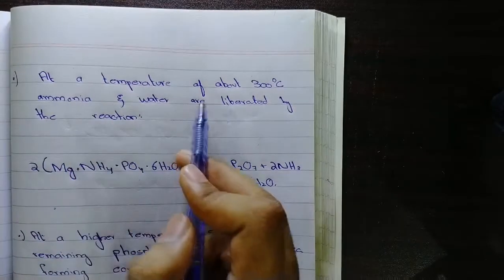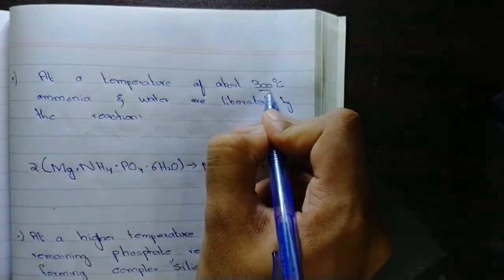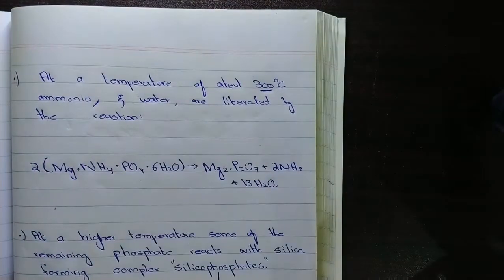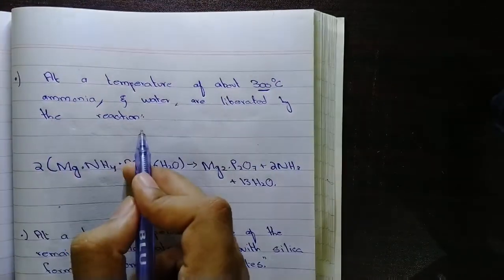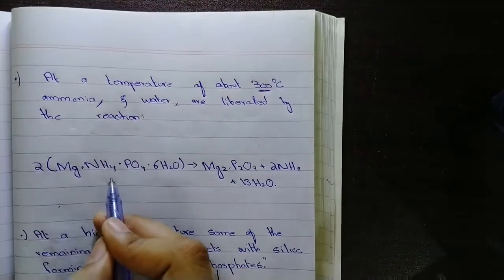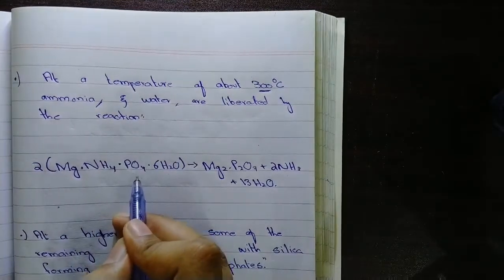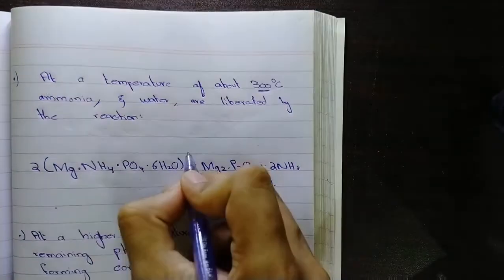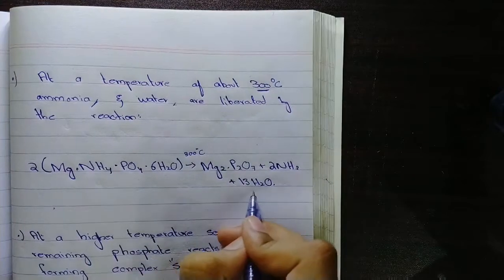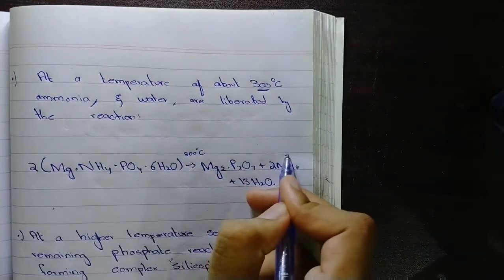At a temperature of about 300 degrees Celsius, ammonia and water are liberated by the reaction. Look at this: magnesium ammonium phosphate at 300°C evaporates water and ammonia, leaving behind magnesium phosphate.